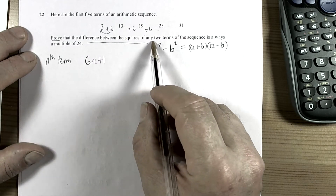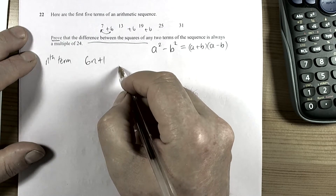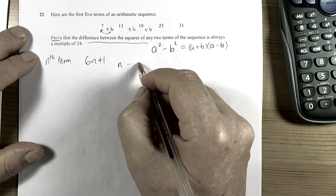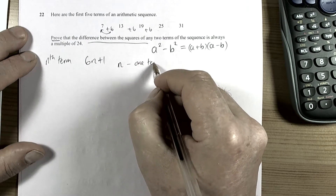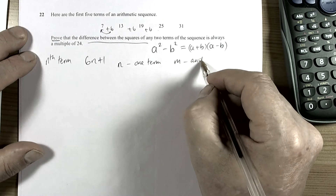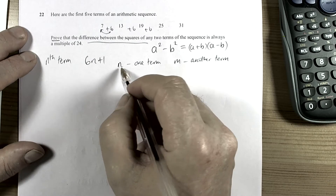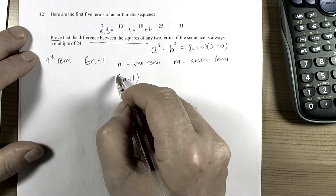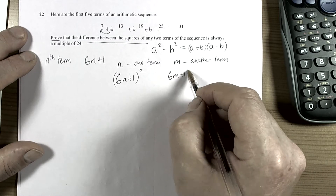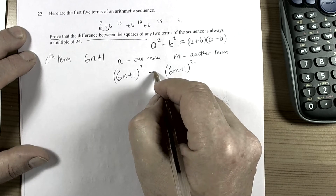We're talking about the difference between the squares of any two terms, so we'll say n is one term and m is another term. So in terms of this one we'd have (6n + 1) all squared, and for the other we'd have (6m + 1) all squared, and we're taking the difference between them.